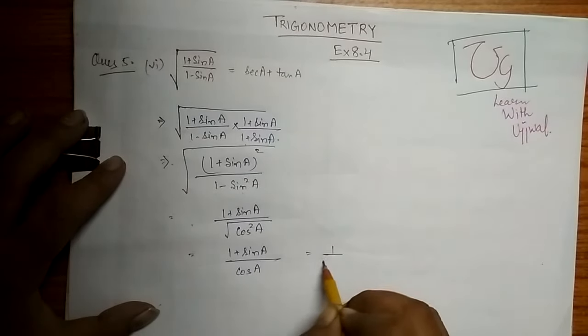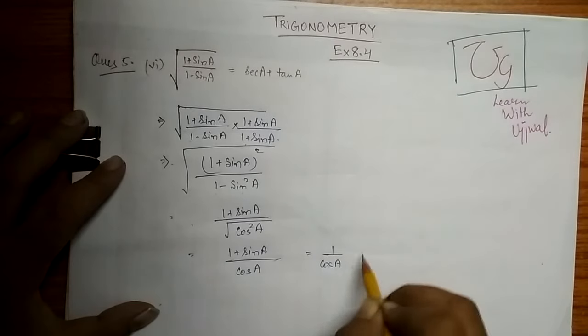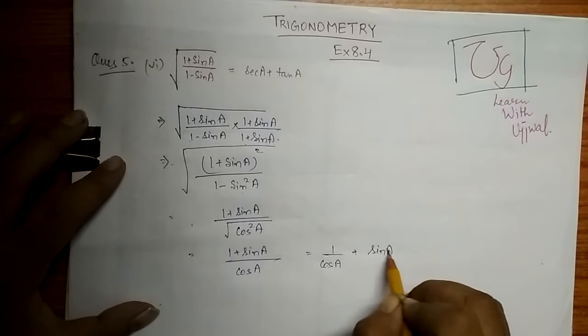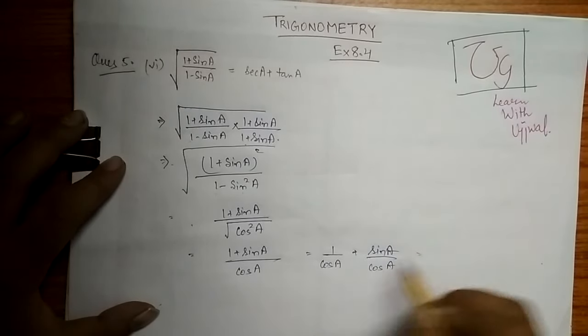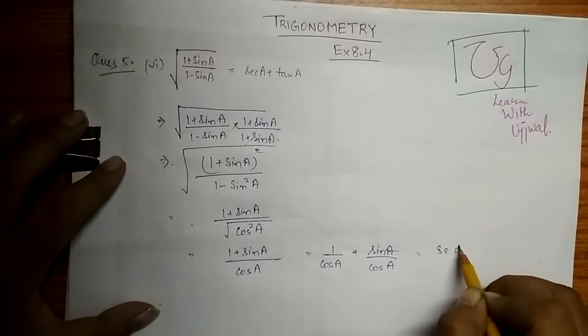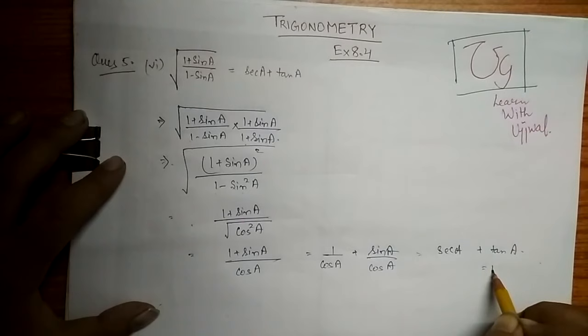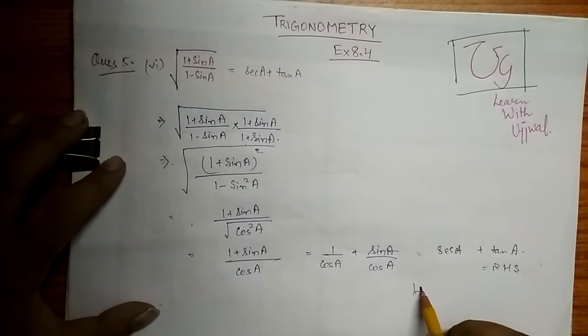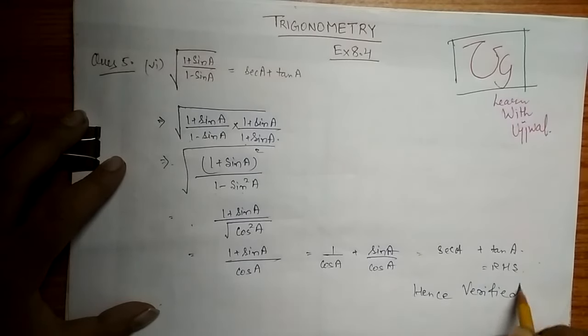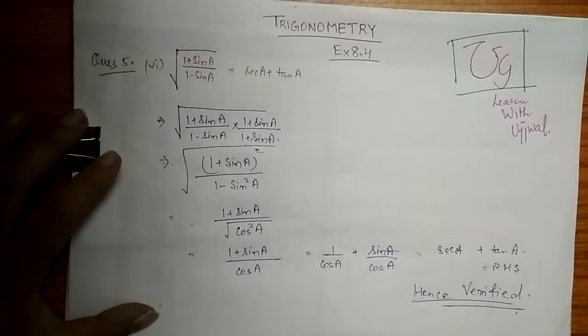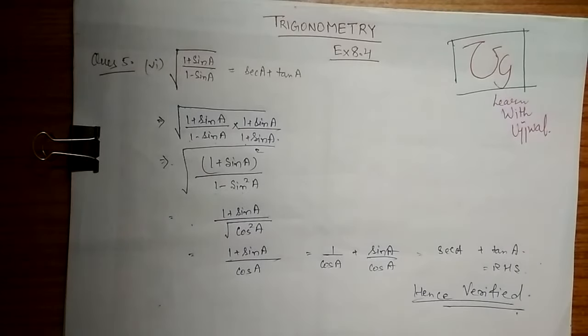We can write it as 1 upon cos a plus sin a upon cos a, and 1 upon cos a is nothing but sec a plus tan a, which is our RHS. I hope you all are understanding these solutions and you are liking these videos. Thank you for watching.